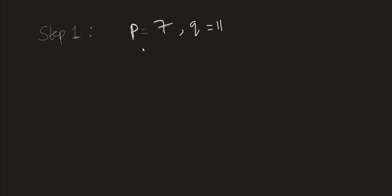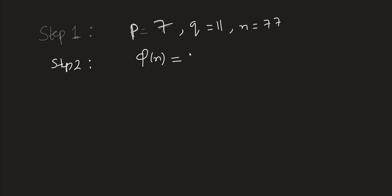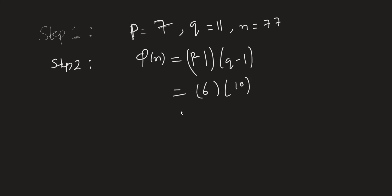We calculate the totient function φ(n). Since P equals 7 and Q equals 11, n equals P times Q, which gives n equal to 77. Therefore φ(n) in step two equals P minus 1 times Q minus 1, which is 6 times 10, equal to 60.